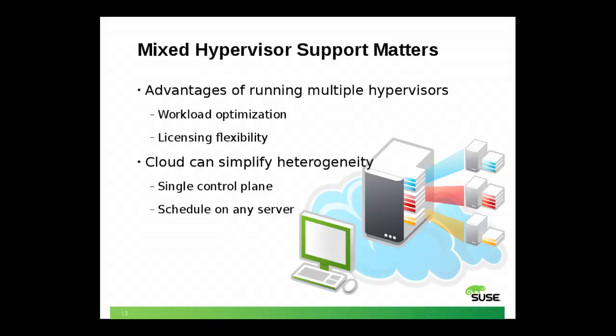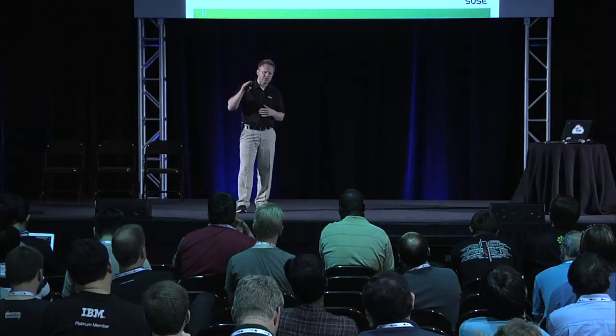Mixed hypervisor support matters because of workload optimization. There may be an application that runs really well on VMware, and there may be one that runs really well on KVM. I always suggest to people that they try those workloads out on the various hypervisors, because you might find you can save costs by running on a KVM or Xen hypervisor rather than VMware and not paying into that VMware tax. Cloud can simplify your control plane — you can schedule instances and workloads across various hypervisors, and it gives you licensing flexibility.